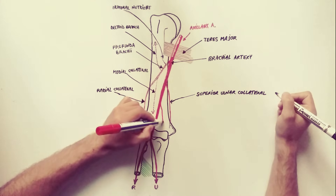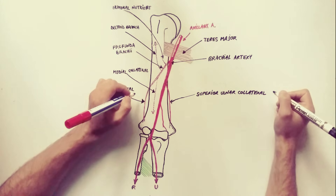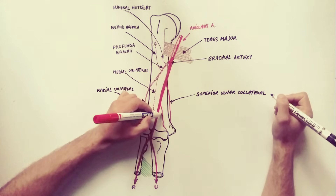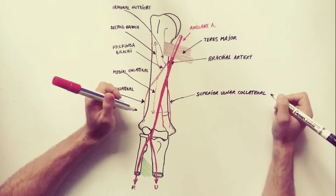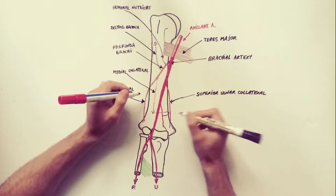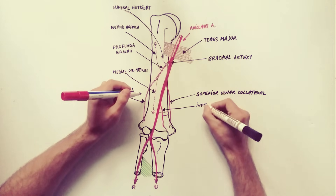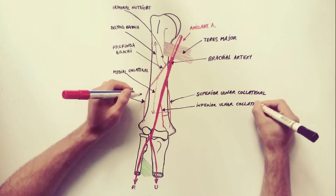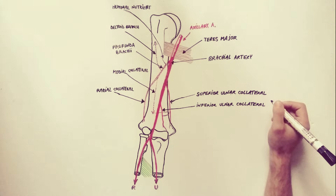The inferior ulnar collateral artery arises about 5 cm above the elbow from the brachial artery. One of its branches winds around the back of the humerus between the triceps brachii and the bone to anastomose with the profunda brachii. Another branch descends in front of the medial epicondyle.